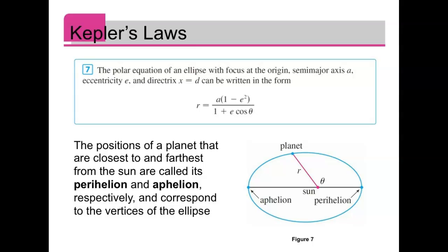The perihelion is the point when your object is closest to the sun. It's also called the perigee sometimes.